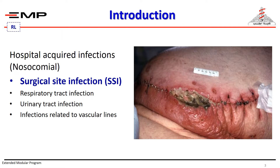Surgical site infection has always been a major complication of surgery. It is considered one of the hospital-acquired, nosocomial infections, that includes hospital-acquired respiratory infections, urinary tract infections related to urinary catheters, and bacteremia related to vascular lines and vascular catheters.